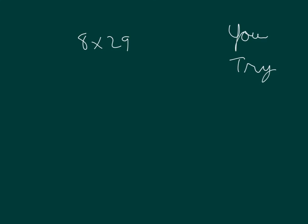Okay, your turn to try. Use our strategies to be able to figure out 8 times 29. Drawing a tape diagram, we have 8s and we have 29 8s.